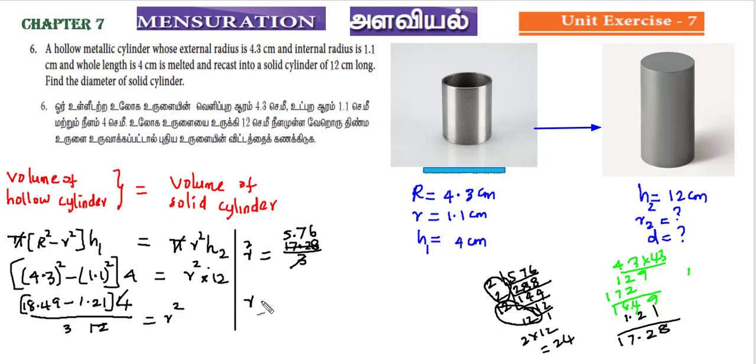r is 2.4 centimeters. With the square root, the radius is 2.4. The diameter is 2×2.4 which is 4.8 centimeters. So the diameter of the solid cylinder is 4.8 centimeters.